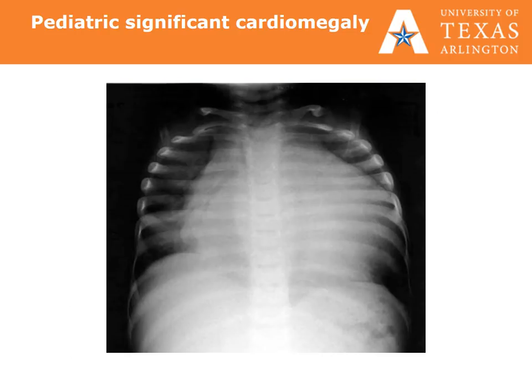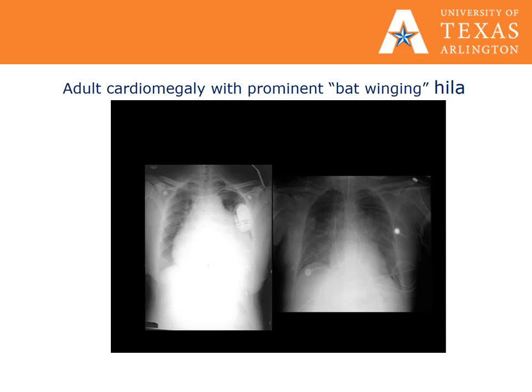Here is a picture of a pediatric X-ray with significant cardiomegaly. Here is an X-ray of an adult with cardiomegaly. Notice the prominent hila or bat-winging appearance. They also have a pacemaker placed.